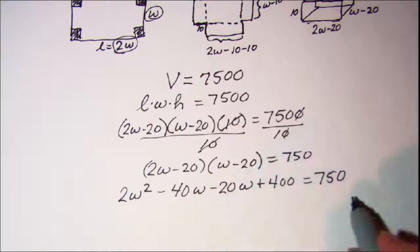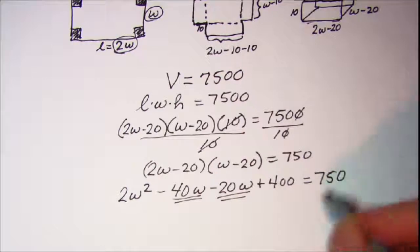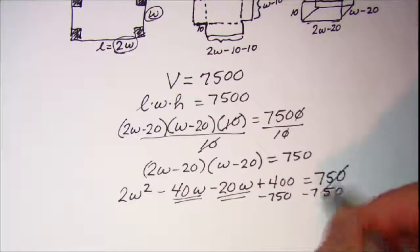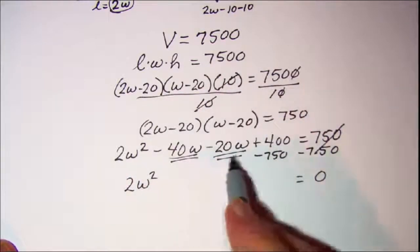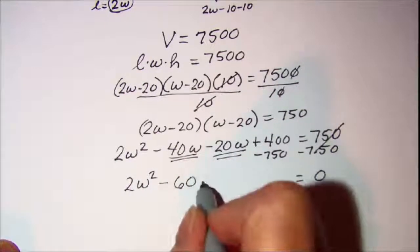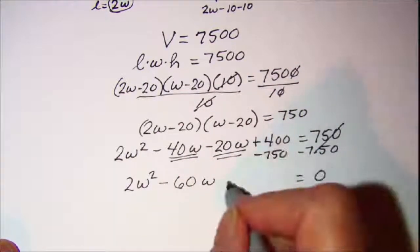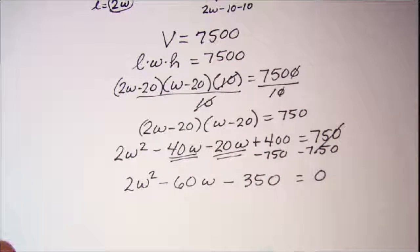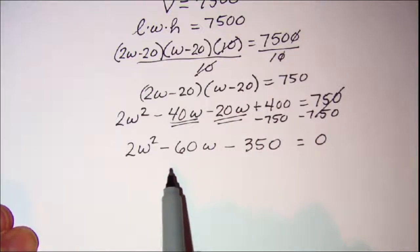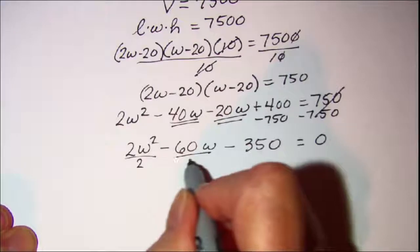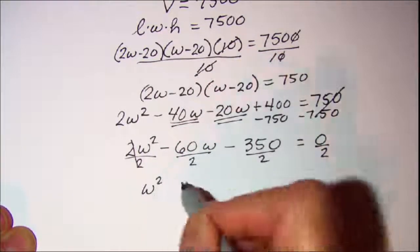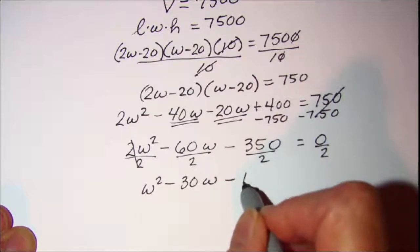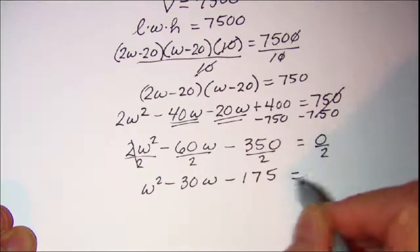In the next step I'll combine like terms and subtract 750 from both sides. This cancels and gives zero on the right side, leaving 2W² minus 60W minus 350 equals zero. Dividing through by 2 gives W² minus 30W minus 175 equals zero.